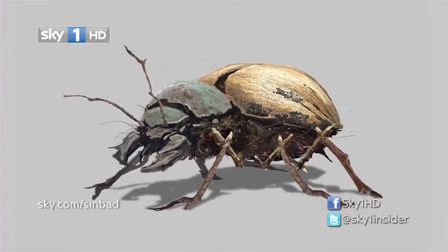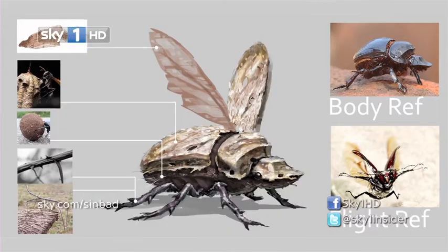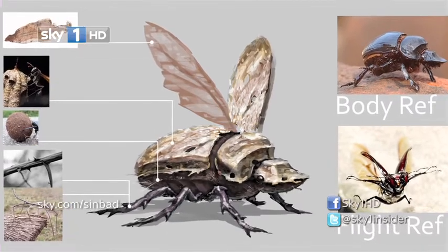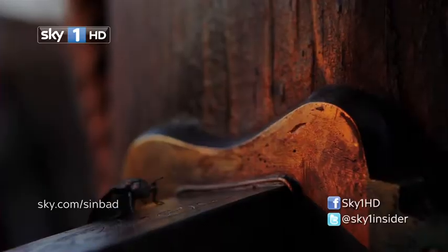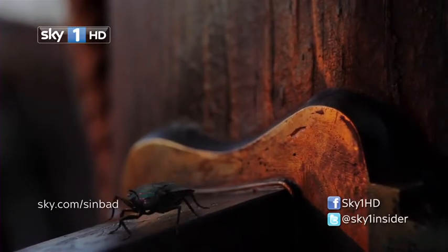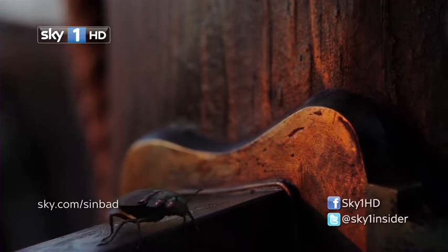We also did a little CG beetle, which I think was only in a couple of shots, but that was quite nice — quite a simple little thing. We made it quite twitchy and creepy as it moved around on the boat.